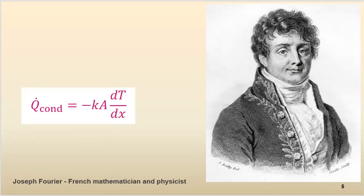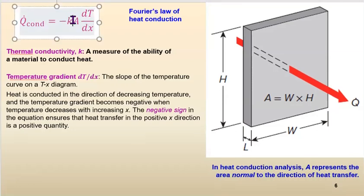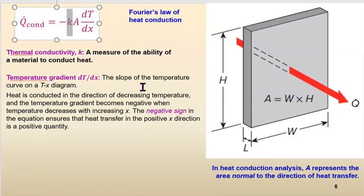This is called Fourier's law of heat transfer — conduction heat transfer. Fourier's law tells us that heat transfer in the form of conduction is correlated with the conductivity of the material. K is a measure of the ability of a material to conduct heat. A is a temperature gradient — the slope of the temperature curve on a T-X diagram, T versus X. And A is the cross-sectional area of the wall.